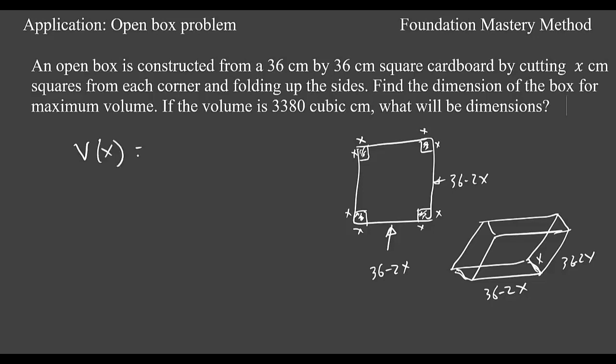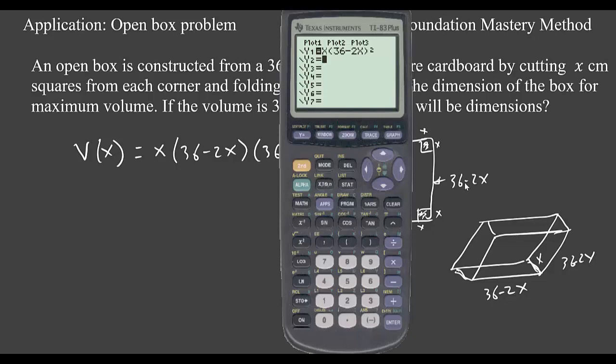So the volume can be written as x times 36 minus 2x times 36 minus 2x. I'm typing my function which is x and then 36 minus 2x, so the term coming twice I keep it square. Now let us graph this one in the regular window and then adjust it.